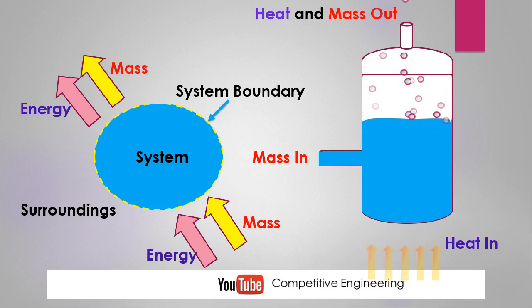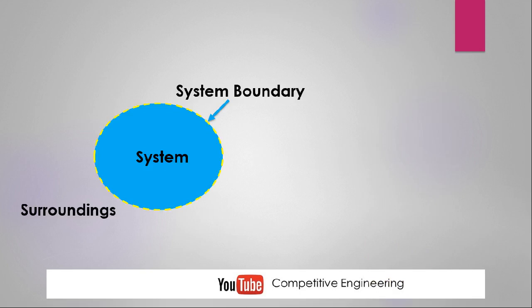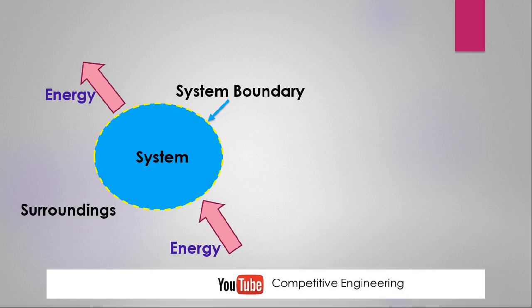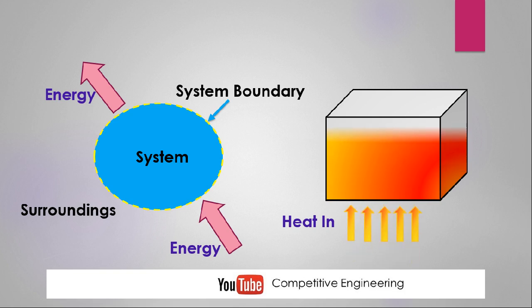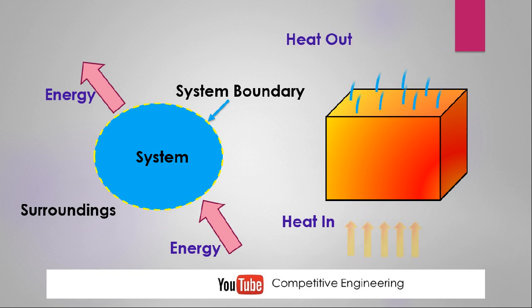Now we move to the second type of system: the closed system. In a closed system there is no mass interaction between the system and surroundings — only energy can go in and out. Consider a metallic cube of fixed mass. I supply heat from the surroundings into the cube, and on heating the temperature rises and the metallic body becomes red hot.